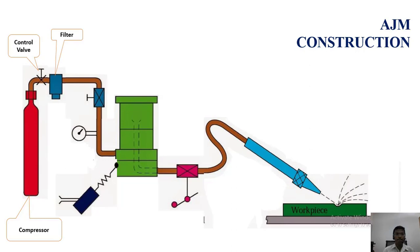Next one is filter. It filters the gas before entering to the compressor and mixing chamber. Then we have pressure regulator, pressure gauges, and pressure regulators. They are used to control the pressure and regulate the flow rate of abrasive jet.